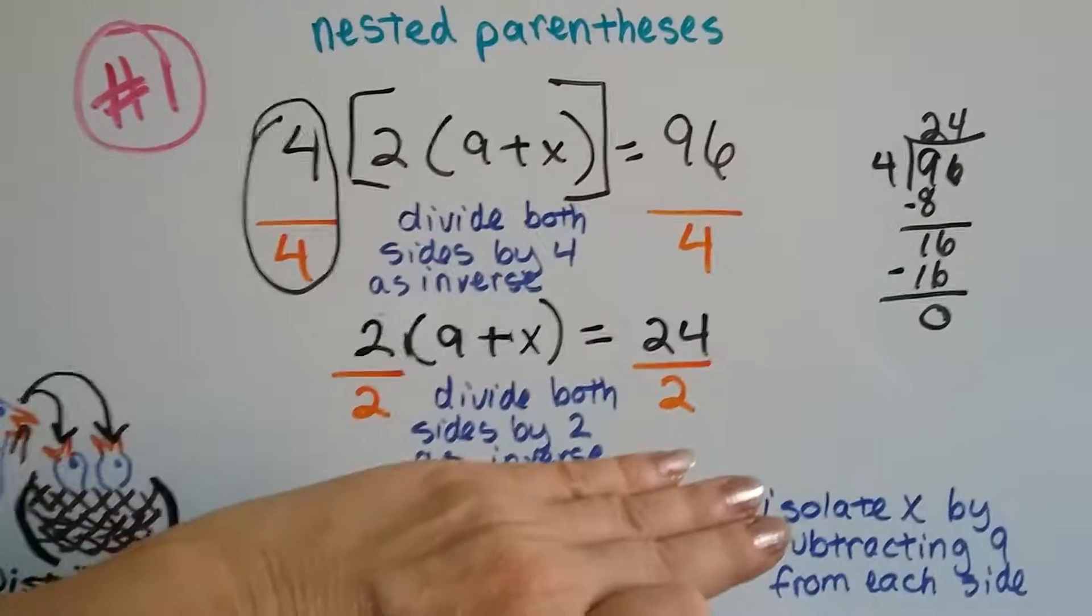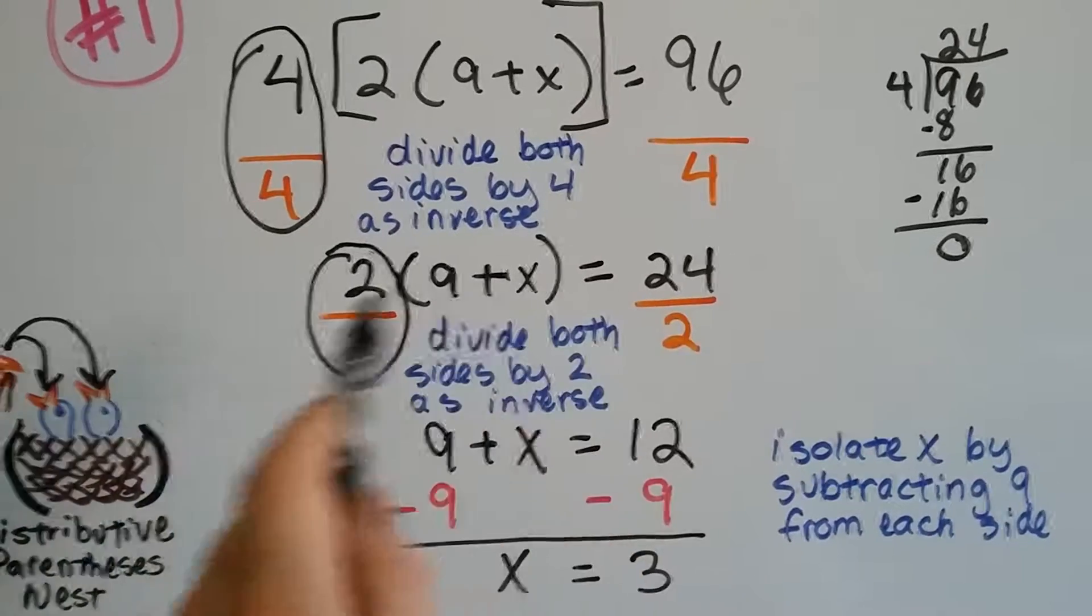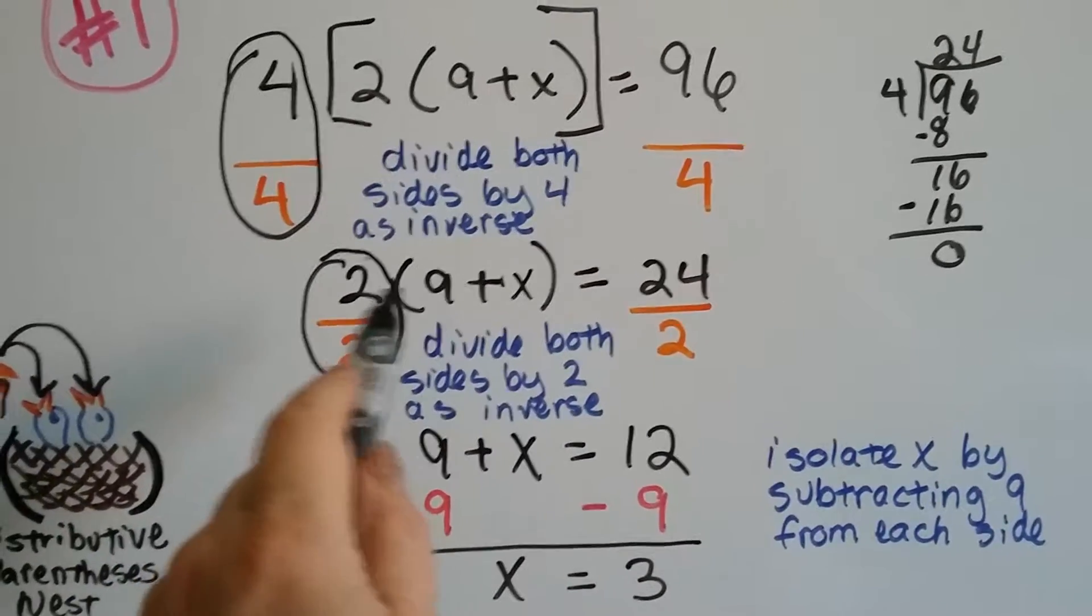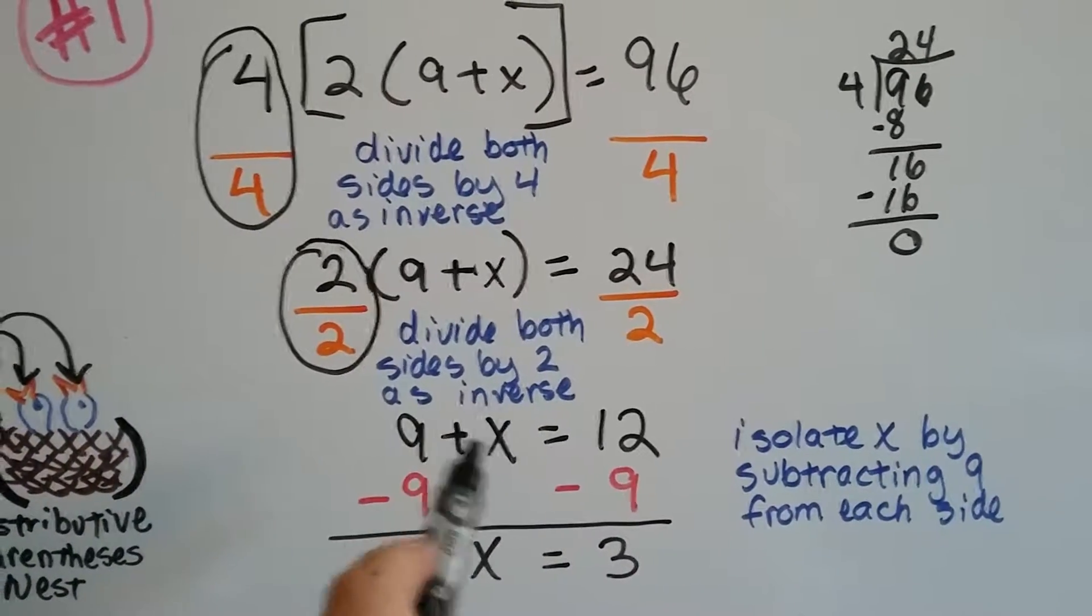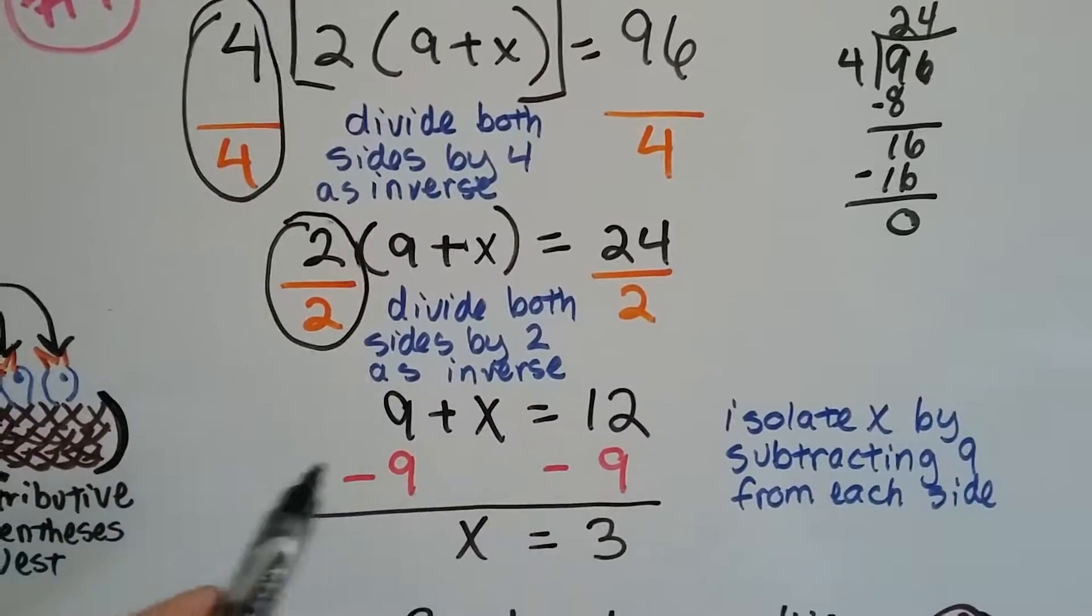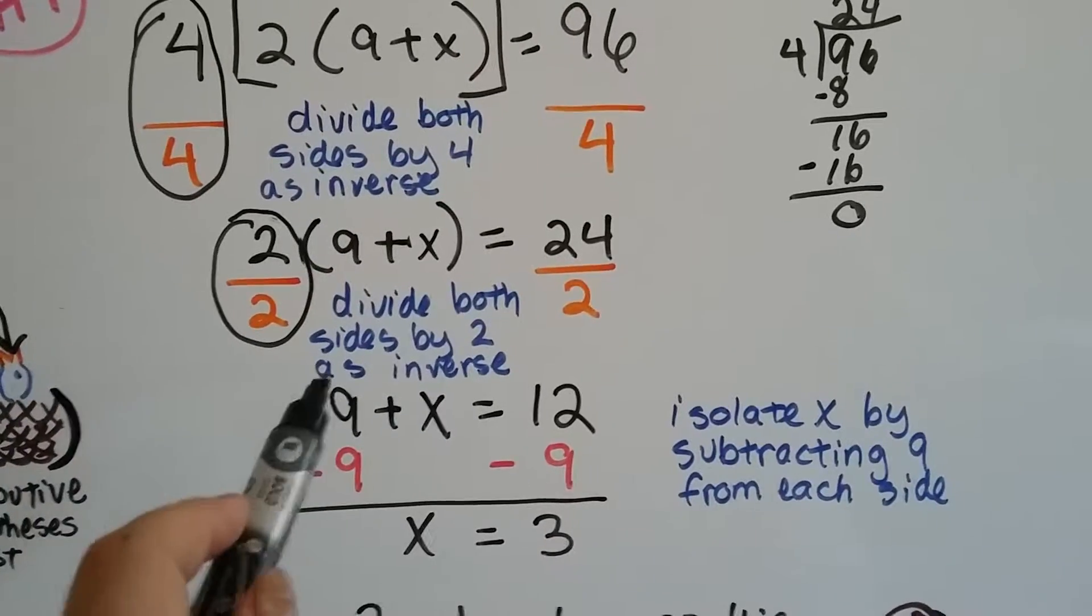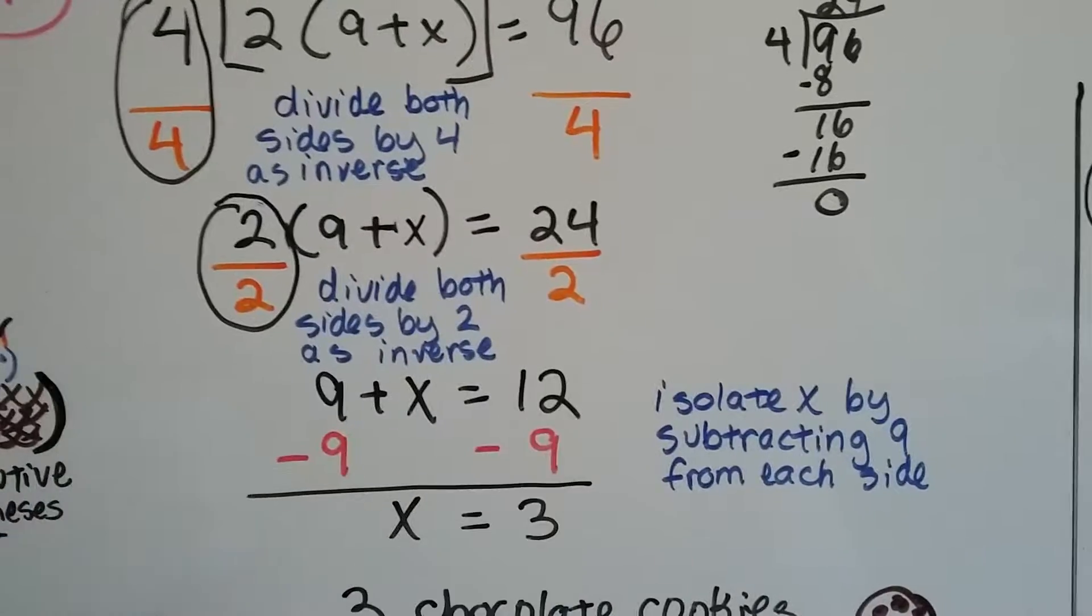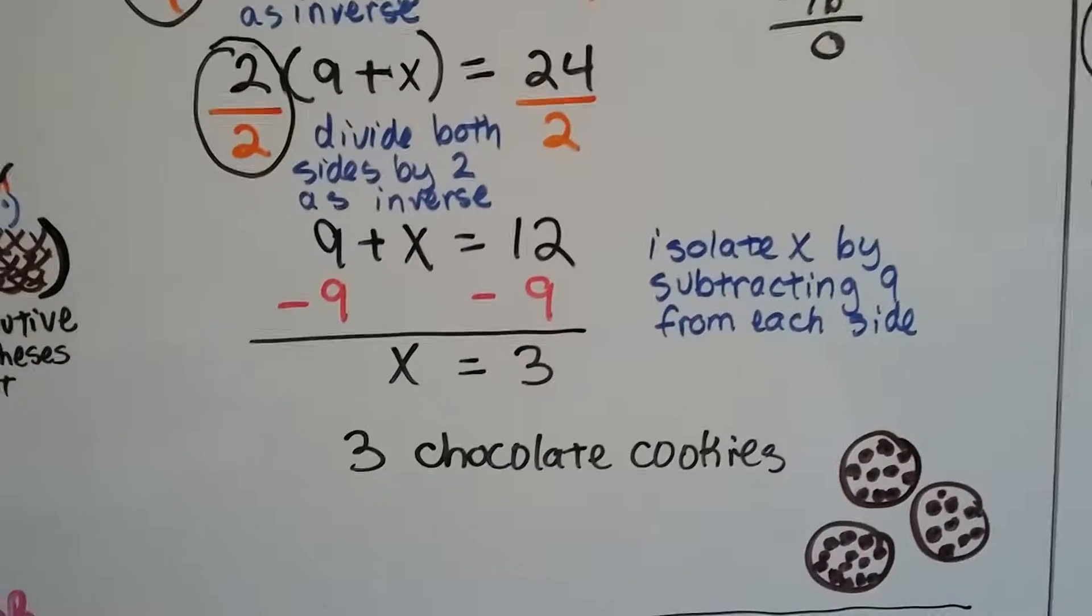I'm going to do it again. We want to get rid of that 2. So now we divide both sides by 2 because it's the inverse of multiplication which is going on right here. And now we have 9 plus X equals 12 because 24 divided by 2 is 12. Now it's getting easier. We can isolate X by subtracting 9 from both sides. Now we have X equals 3. So we know we ate 3 chocolate cookies at each sitting.